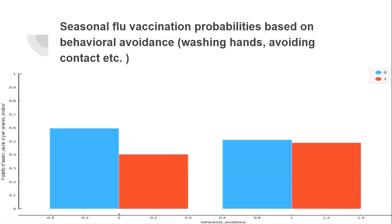The instructor also points out that the team has not shown the distribution of target values in the samples at all. How many samples chose the seasonal flu shot? How many already got the H1N1 flu shot? The instructor asks: how do you know if your database is balanced or imbalanced? Maybe some samples chose both? How many people got shots for both? The team admits they don't know.